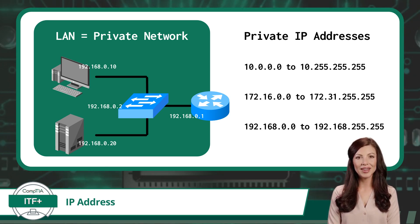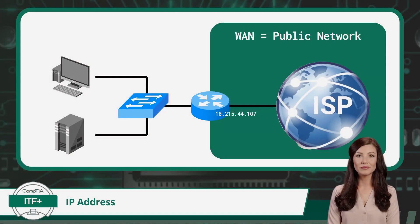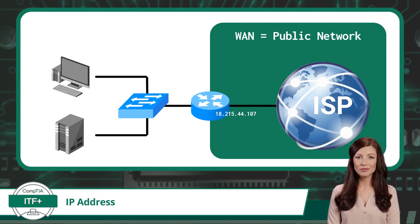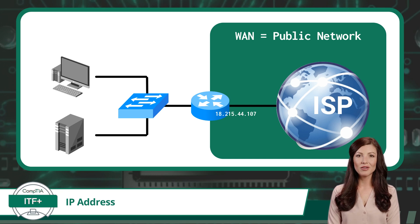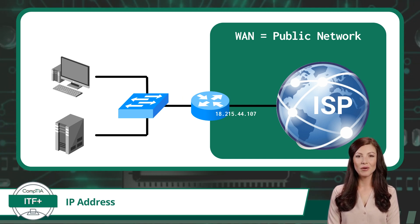It's a good idea to remember these private IP address ranges, as they will appear again throughout your IT journey. Public IPv4 addresses behave differently — they are assigned to devices that connect directly to the internet. These addresses are unique globally and allow devices to communicate with each other across the internet. Internet service providers, or ISPs, assign public IP addresses to devices connected to their network.